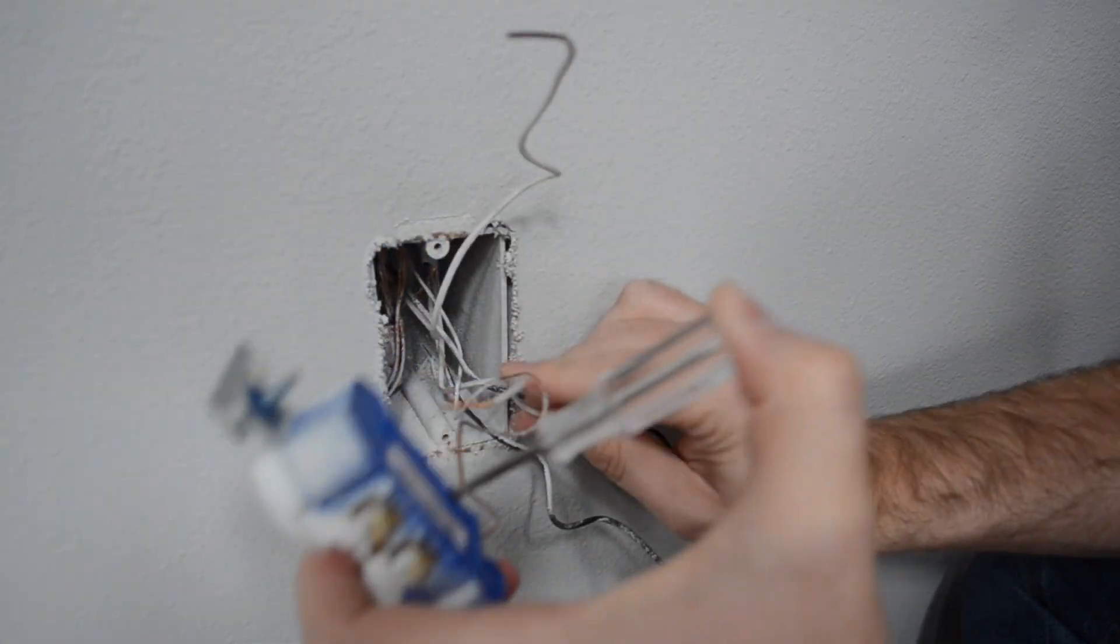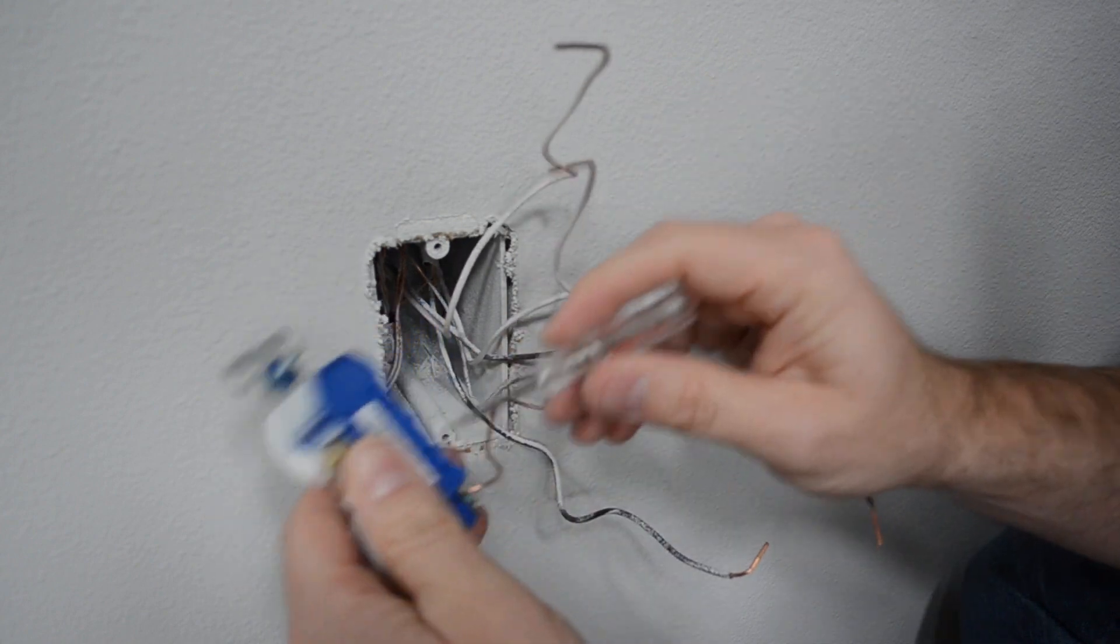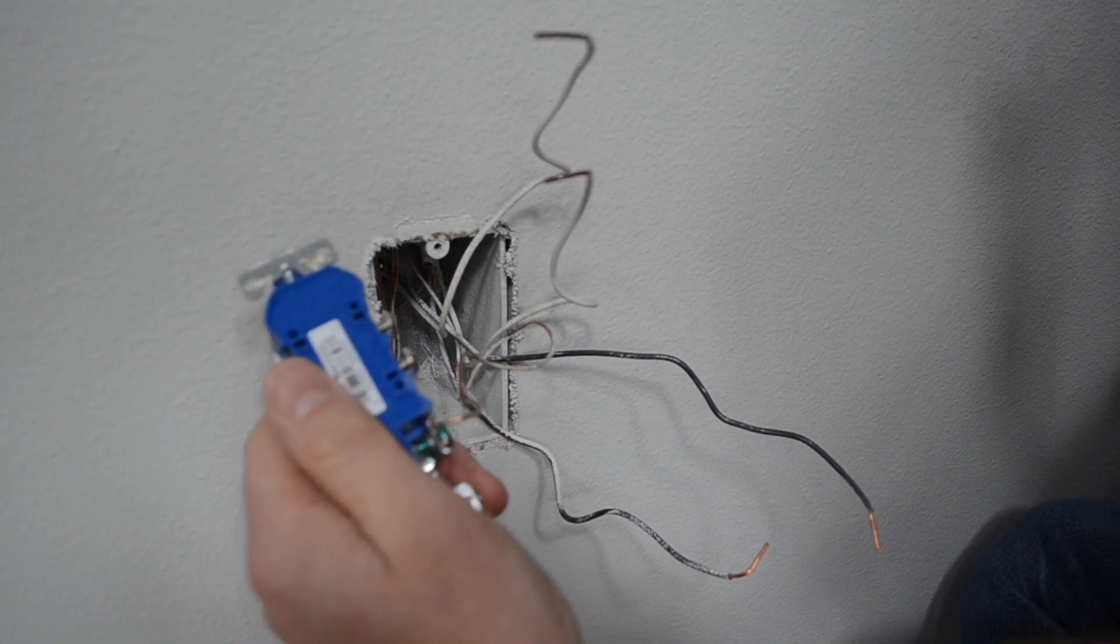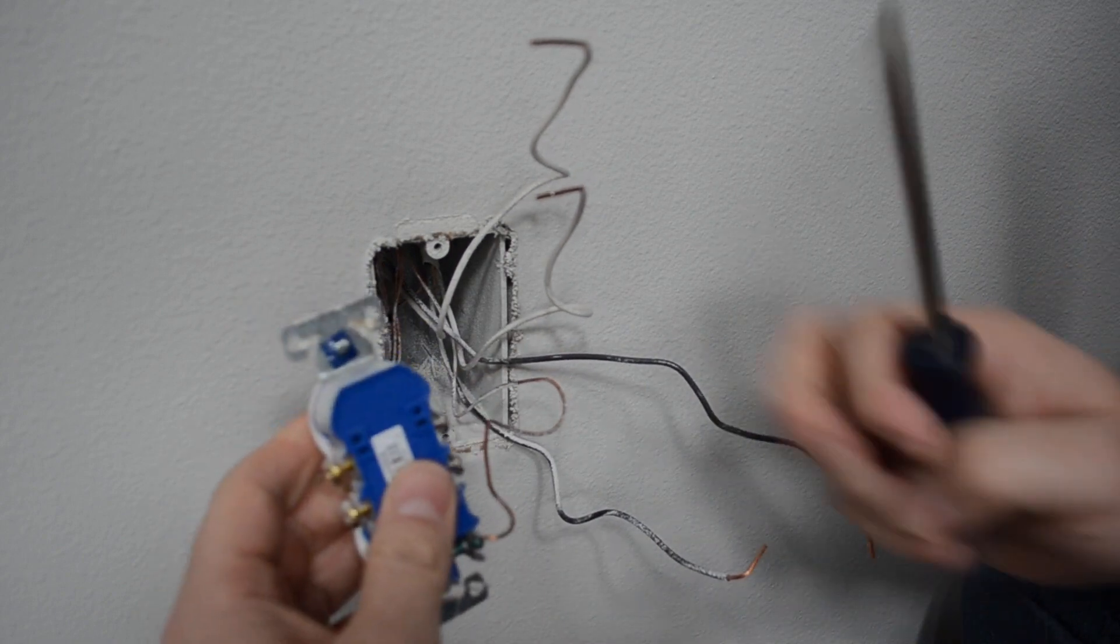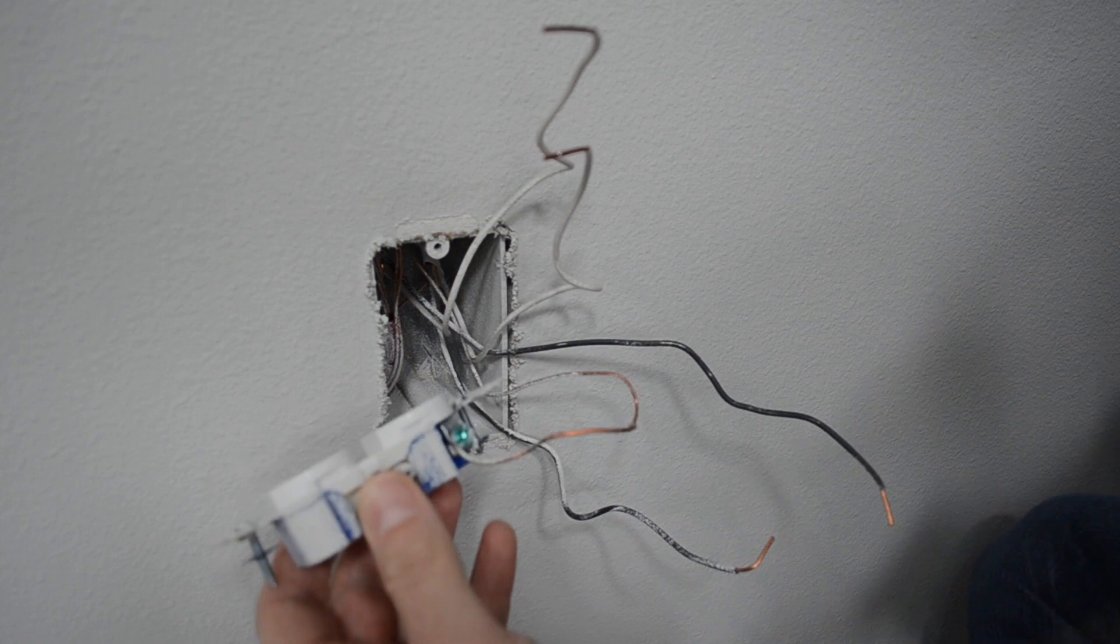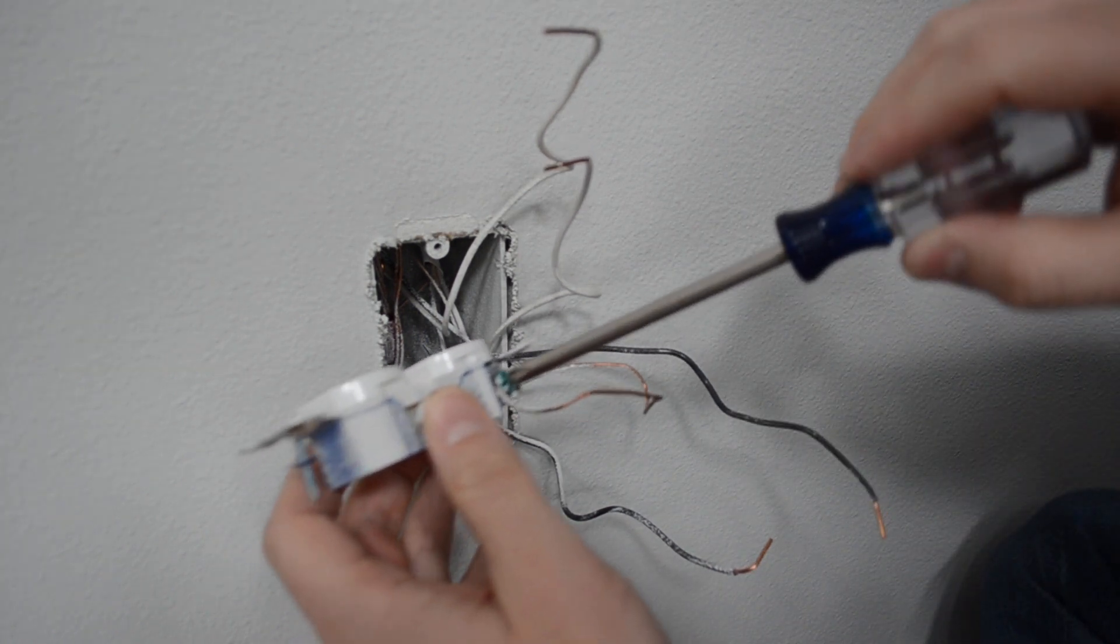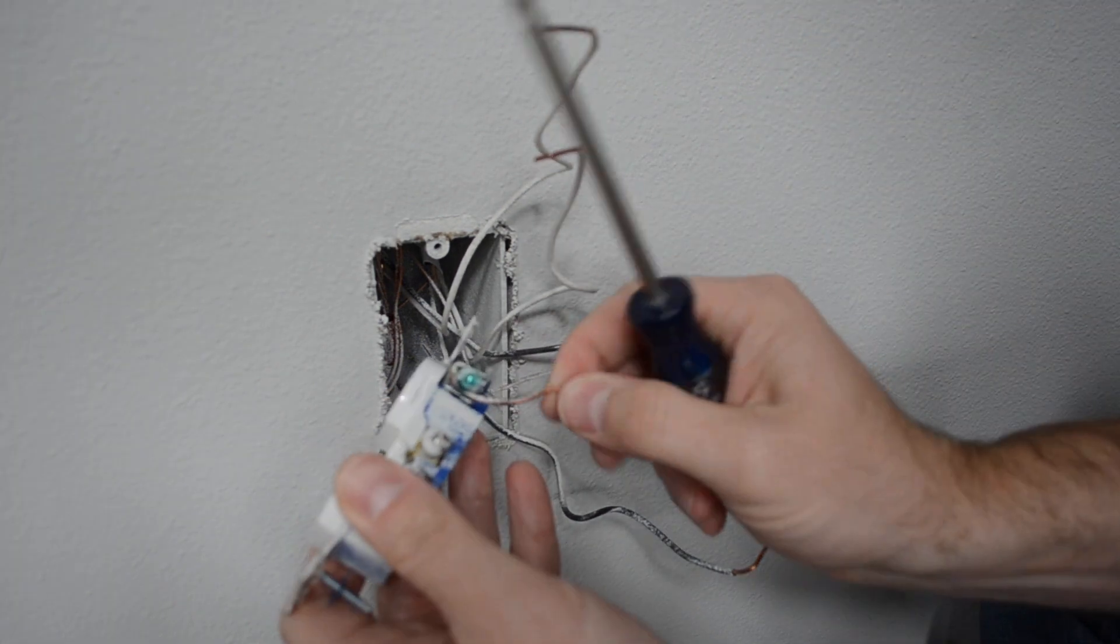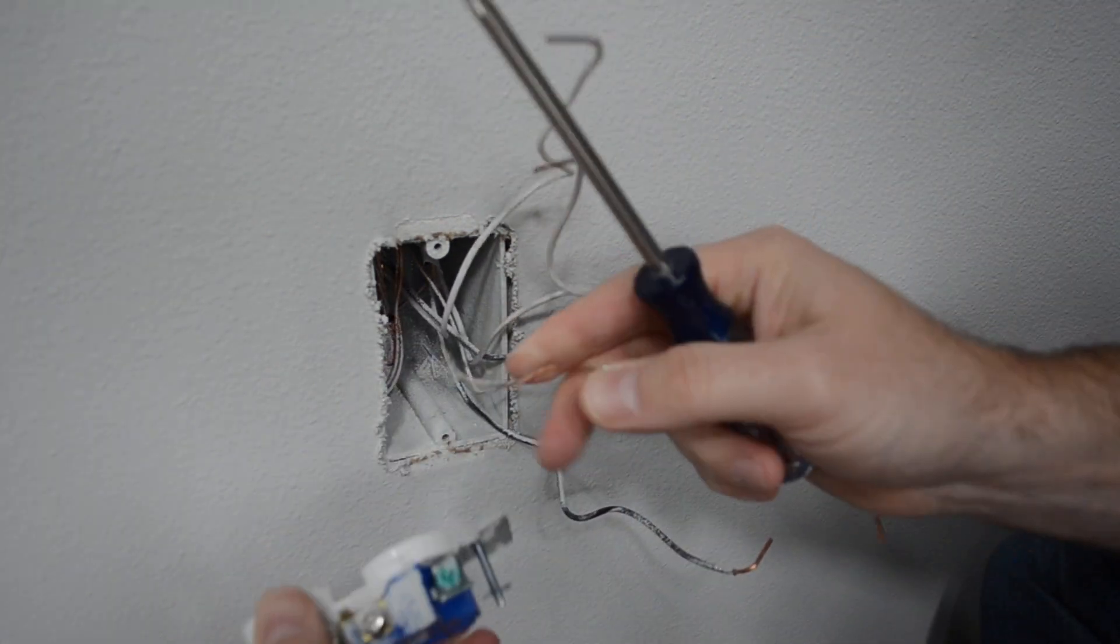That should be one more wire attached to the old outlet, which is the ground wire. For that one, you'll need a screwdriver. The ground is always hooked up to the green. Loosen the screw a little bit and that will pop right off.